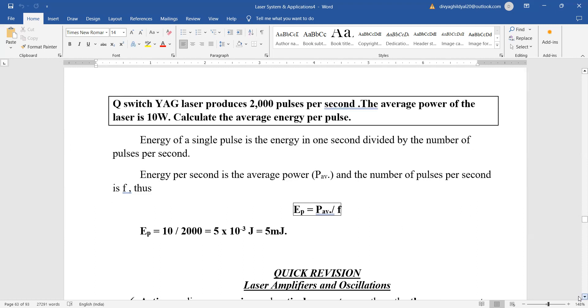Q switching yttrium laser produces 2000 pulses per second. Average power of the laser is 10 watt. Calculate the average energy per pulse.